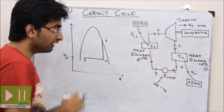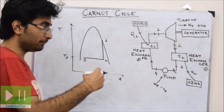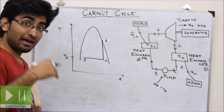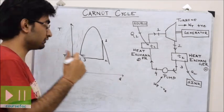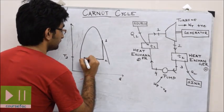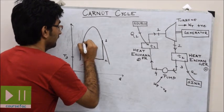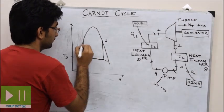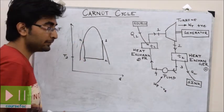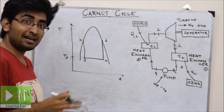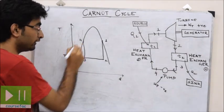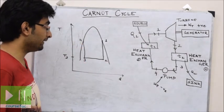From 3 to 4, work is done on the pump, so this is isentropic compression. Compression takes place back to the original pressure. So 3 to 4 is isentropic compression.